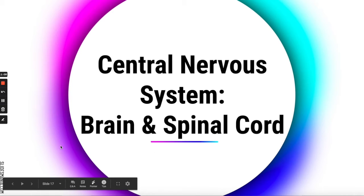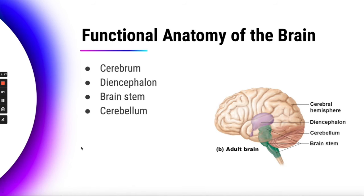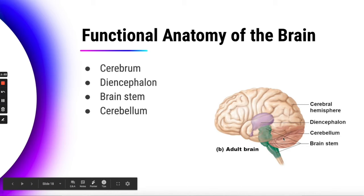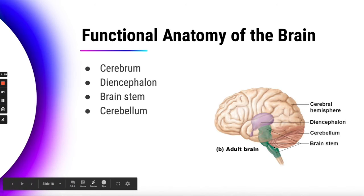We're going to spend the rest of the lesson looking at the brain and spinal cord. The functional anatomy of the brain: each part has different functions. We have the cerebrum — the largest part of the brain with two hemispheres. We're looking at the left hemisphere here. The diencephalon is inside, shaded. Then we have the brain stem, and the cerebellum is at the back. We'll go in that order.